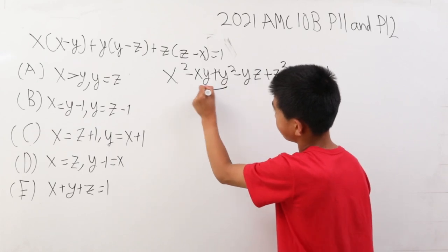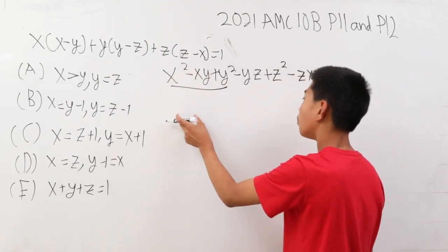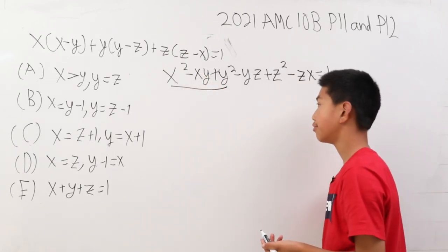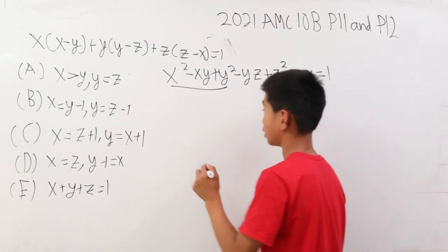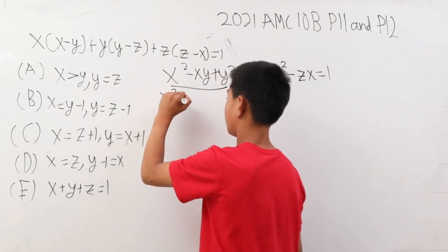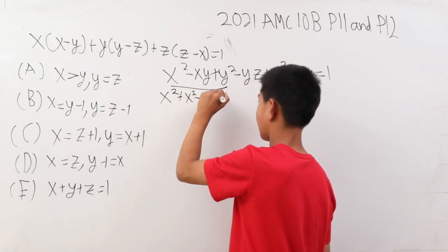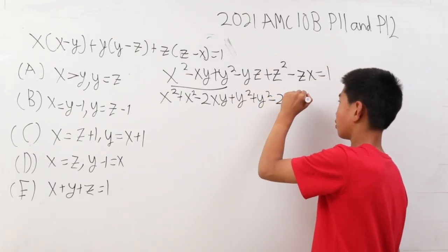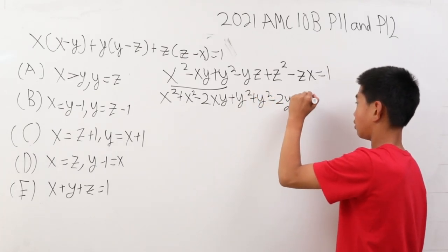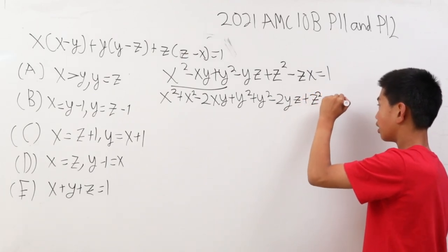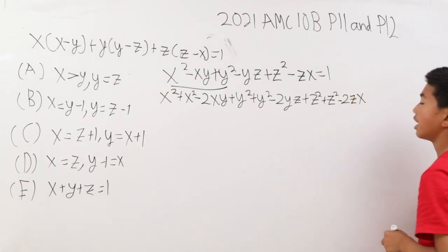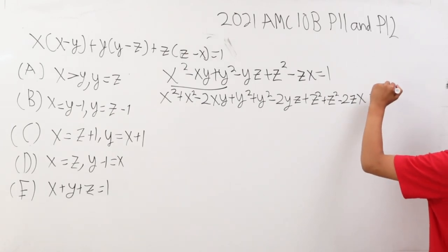Now take a look at these first three terms. We can almost complete the square, but this coefficient isn't negative 2 for the xy. For it to be negative 2, we have to multiply everything by 2. So this becomes x squared plus x squared minus 2xy plus y squared plus y squared minus 2yz plus z squared plus z squared minus 2zx. And since we have multiplied everything by 2 on the left-hand side, we have to multiply everything by 2 on the right-hand side. This becomes 2.